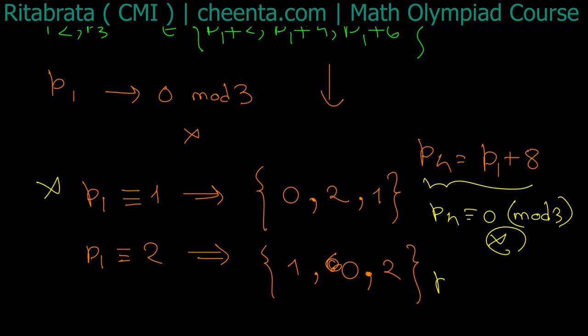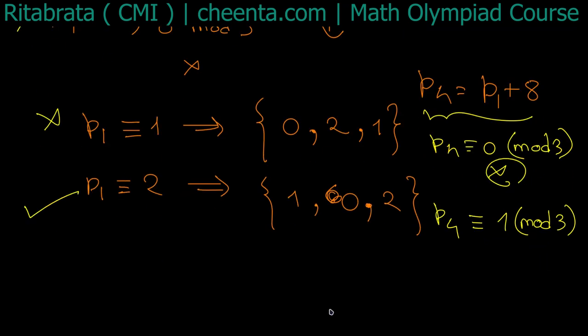In this case what do we get? In this case we get p4 congruent to p1 + 8, that is 2 + 8 = 10, which is congruent to 1 modulo 3, and that is also fine. Okay. But if p1 is congruent to 1 modulo 3, that would mean p4 is congruent to 0 modulo 3. That would be a contradiction. So p1 cannot be congruent to 1 modulo 3. It is not 0 either. So p1 must be congruent to 2 modulo 3.